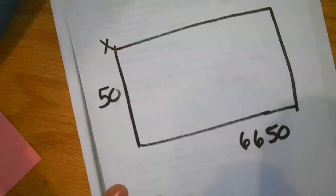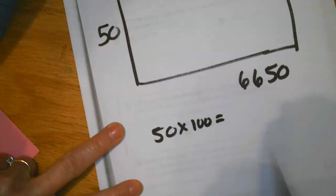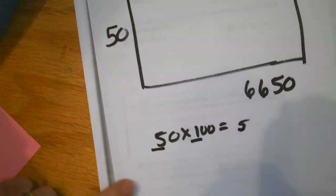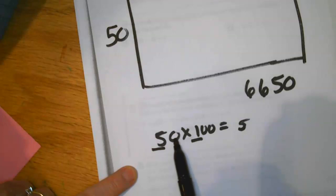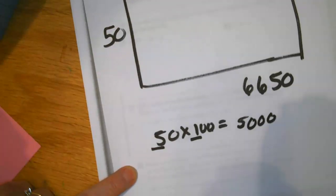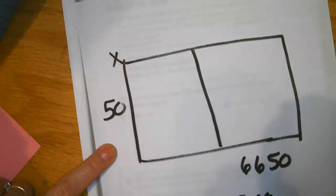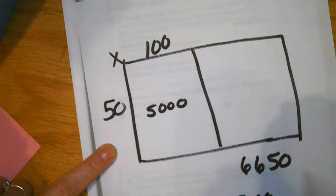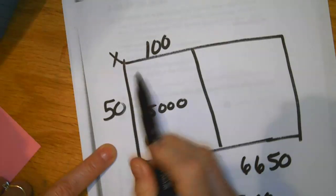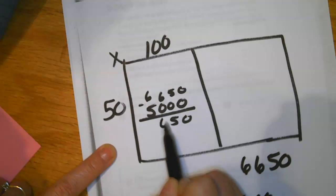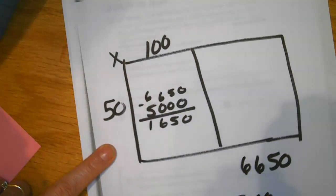I know that 50 times 100 is equal to 5,000. I'm going to use my mental math, my simple fact: 5 times 1 is 5, and then I'm going to use annexing my zeros — 1, 2, 3 — and I get 5,000. So that's a pretty good chunk out of 6,650. I'm going to represent that with a pretty good size of my area up here and say 50 times 100 is equal to 5,000. Now I want to subtract that from my 6,650. 0 minus 0, 5, 6, and 6 minus 5 is 1. So I still have 1,650.